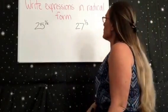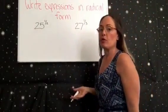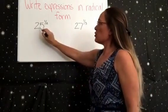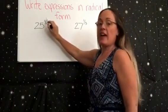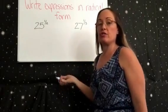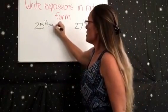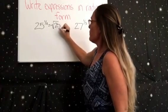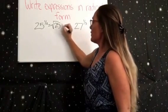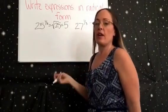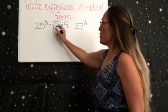Hello, now we're going to write expressions in radical form. I wrote two examples that we can use. The first one is 25 to the exponent one-half. So all you have to do is square root the 25, and then the square root of 25 is 5. So that one's pretty easy, but you do have to remember once you see this to square root it.